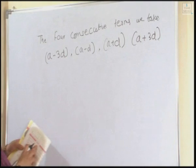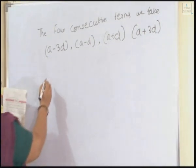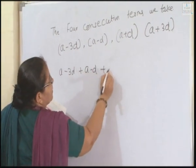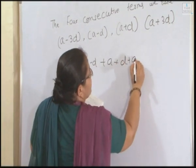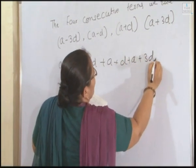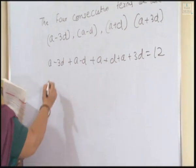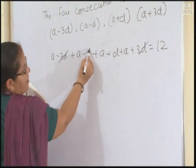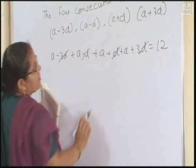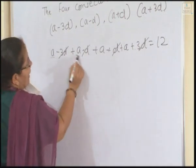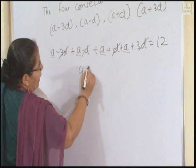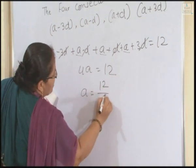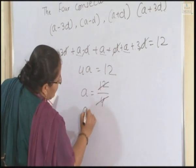Here it's given whose sum is 12, which means the sum of all four terms is 12. So A minus 3D plus A minus D plus A plus D plus A plus 3D equals 12. Here we see 3D and 3D will cancel because this is plus and here is minus. D and D will cancel. All the D's cancel, only A remains. Four A equals 12, so A's value is 12 divided by 4. A equals 3.